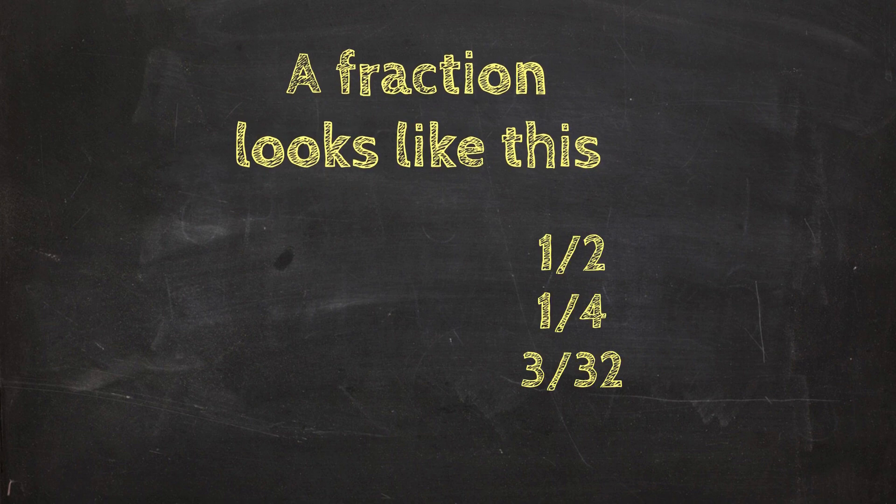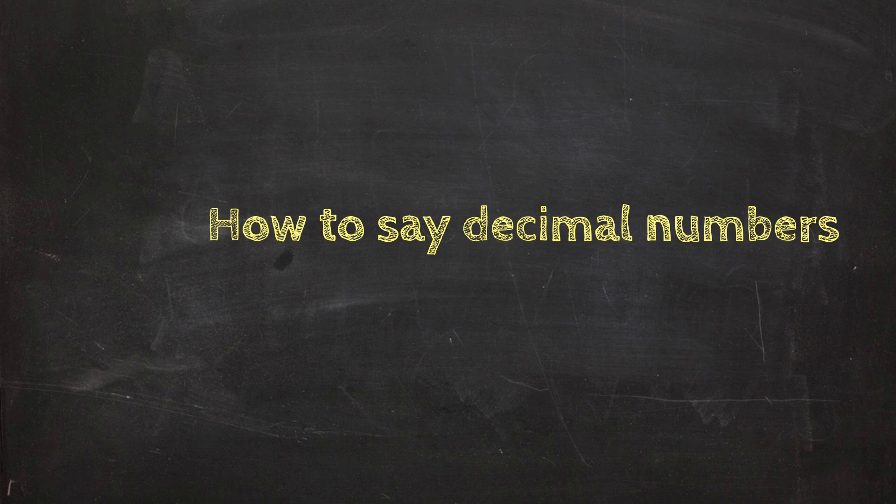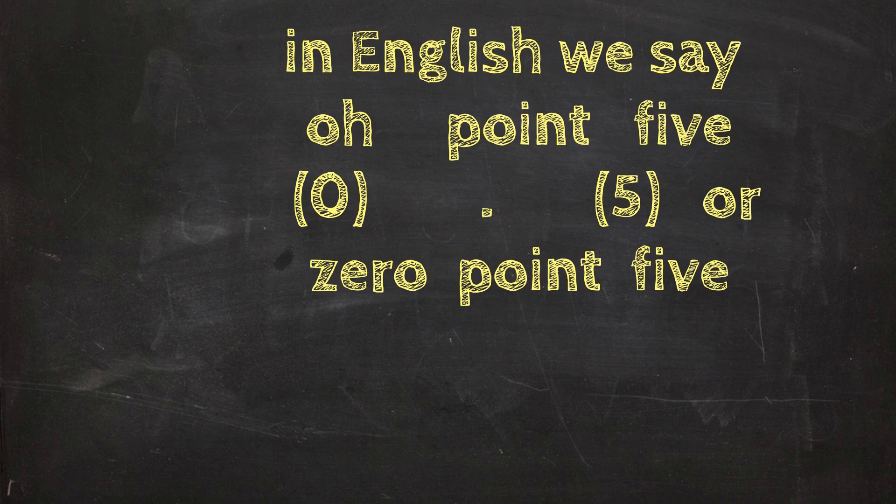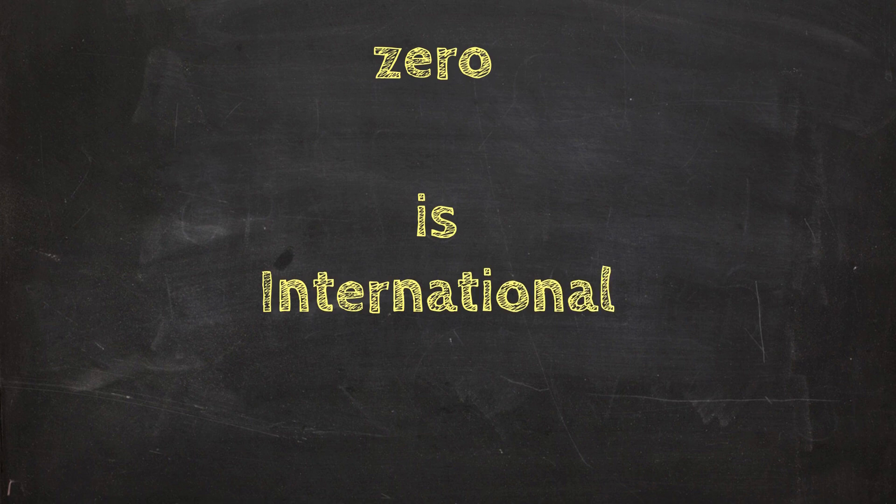So how do you say decimal numbers in English? Well, in English we say 0.5, which is British English, or 0.5. 0.5 or 0 is more international. I would advise that you learn to say the word zero.